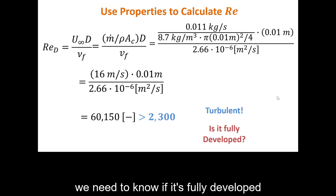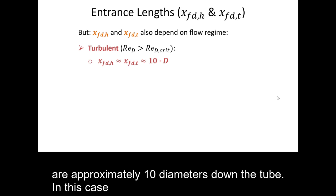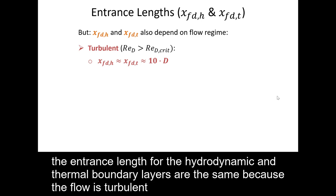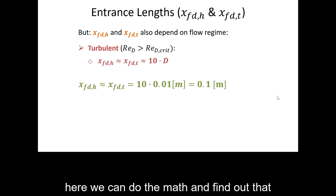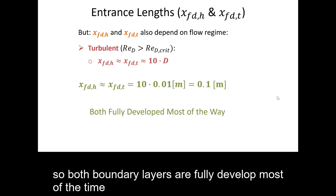But we need to know if it's fully developed. So entrance lengths for turbulent flow are approximately 10 diameters down the tube. In this case the entrance length for the hydrodynamic and thermal boundary layers are the same because the flow is turbulent. Here we can do the math and find out that the fully developed region is the first 0.1 meters or 10 centimeters. So both flows are fully developed most of the time, or both boundary layers are fully developed most of the time.